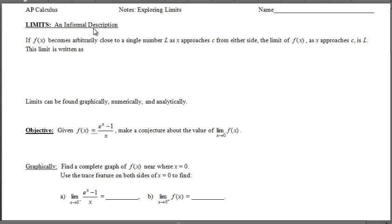We have an informal description. If f of x, and I want you to think about this being y, if the y values become arbitrarily close to a single number l, as the y's are approaching some number l, as x approaches c. C just represents some particular x value along the x-axis. As x approaches c from either side, the limit of the y's as x approaches this c is called l. What's important here is the notation.